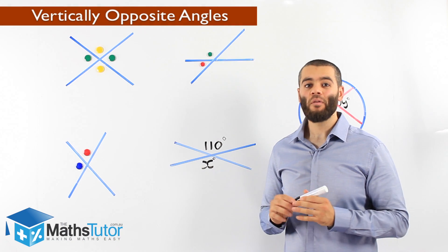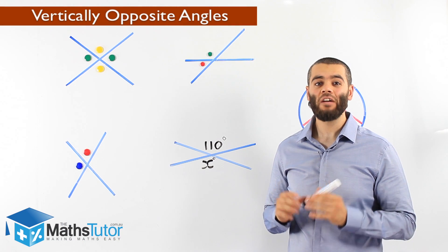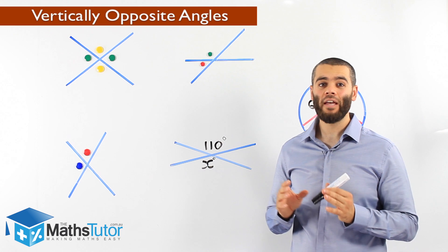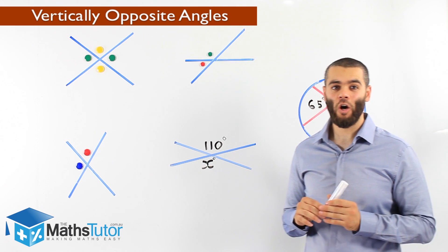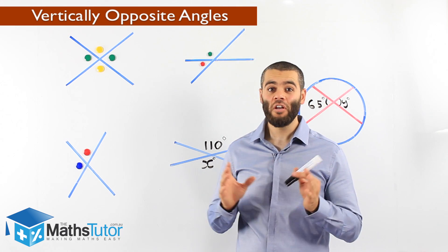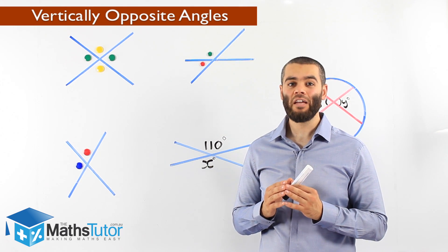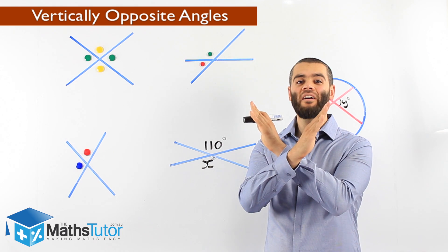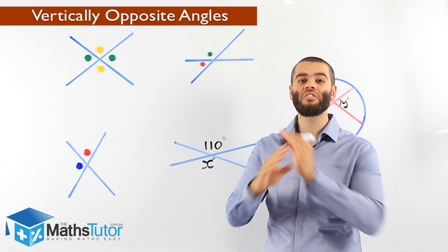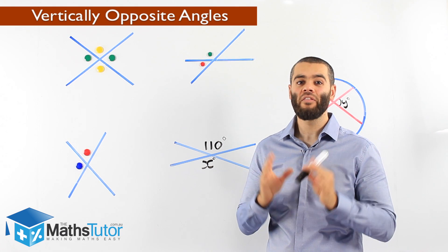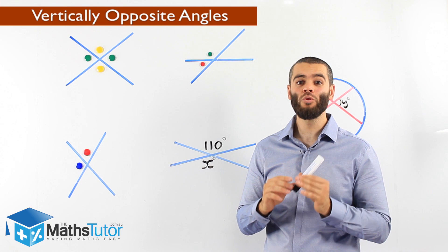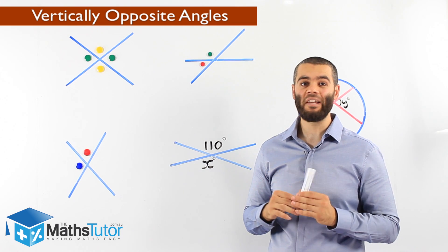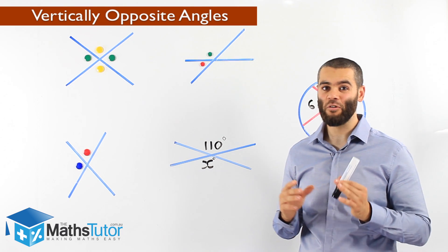I'm going to show you how to identify and locate vertically opposite angles. Vertically opposite angles are angles that are created when two straight lines cross one another. There are four angles created — two pairs of vertically opposite angles.